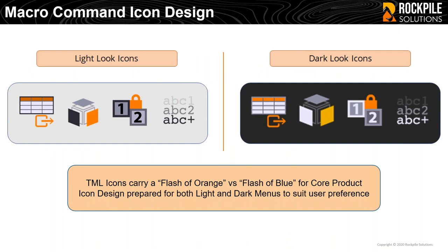You'll see a new look throughout the presentation. We've developed all of the iconology for the product in both light and dark looks. There is no dark mode in TBC today, but we've added a darker look more like the traditional appearance. The TML icons carry a flash of orange — they use the same design standards as the Trimble icons but with orange instead of blue. So when you're running a command, if it's got a flash of orange you know it's a TML; if it's a flash of blue, you know it's a Trimble core product.